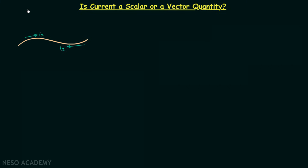In the previous lecture we had a discussion on conventional current and electron current. At the end of that lecture I gave you one homework problem, and in this lecture we are going to understand the solution of that homework problem first, and then we will move on with the discussion. The homework problem was related to the calculation of two currents I1 and I2.